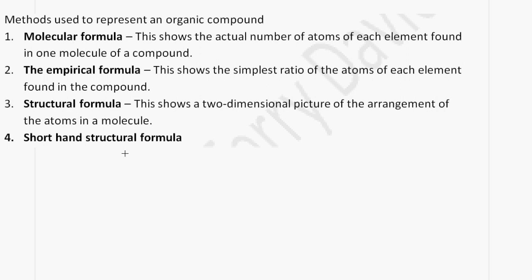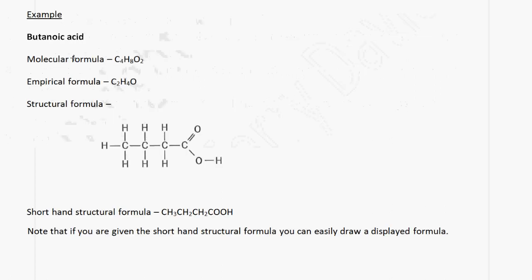And then we also have the shorthand structural formula. The example we're going to use is butanoic acid. The molecular formula for butanoic acid is C4H8O2. Its empirical formula gives you the simplest whole number ratio, so we can write that as C2H4O.